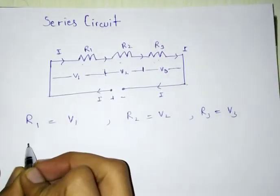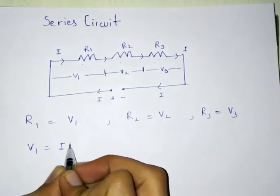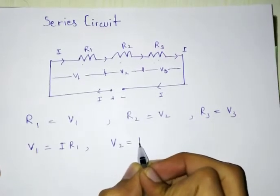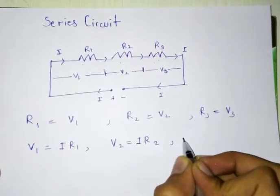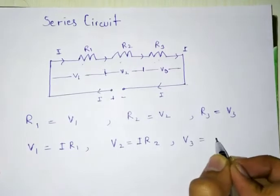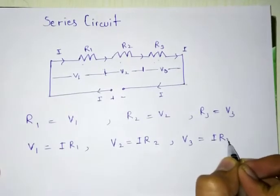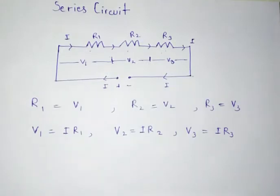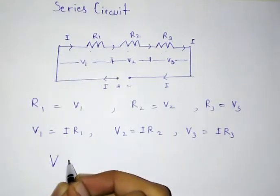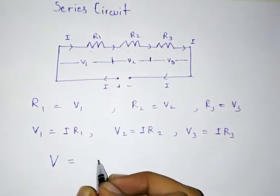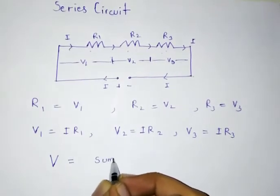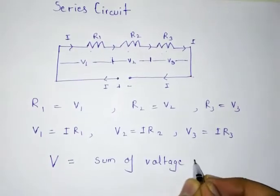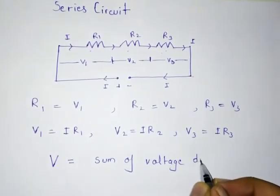So the actual value of V1 is I R1, actual value of V2 is I R2, and actual value of V3 is I R3. And we also know that the total voltage is the sum of voltage drops.